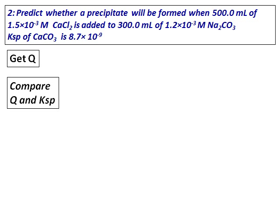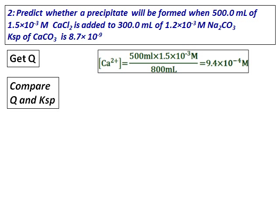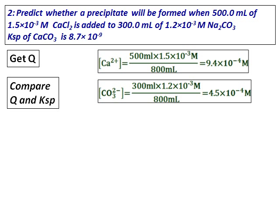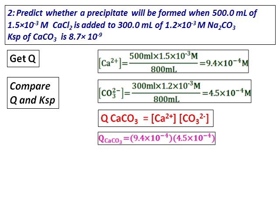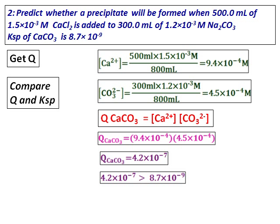To get the value of Q, I need the concentrations of calcium ions and carbonate ions. Since I am taking only 500 mL and the total volume becomes 500 plus 300, the concentration of calcium ion is calculated as shown. The concentration of carbonate ion is also calculated — the 800 mL comes from the total volume, 500 plus 300. Once I have the concentrations, calculate Q by substituting the values. I find that Q is larger than Ksp, and therefore there will be a precipitate of calcium carbonate formed.